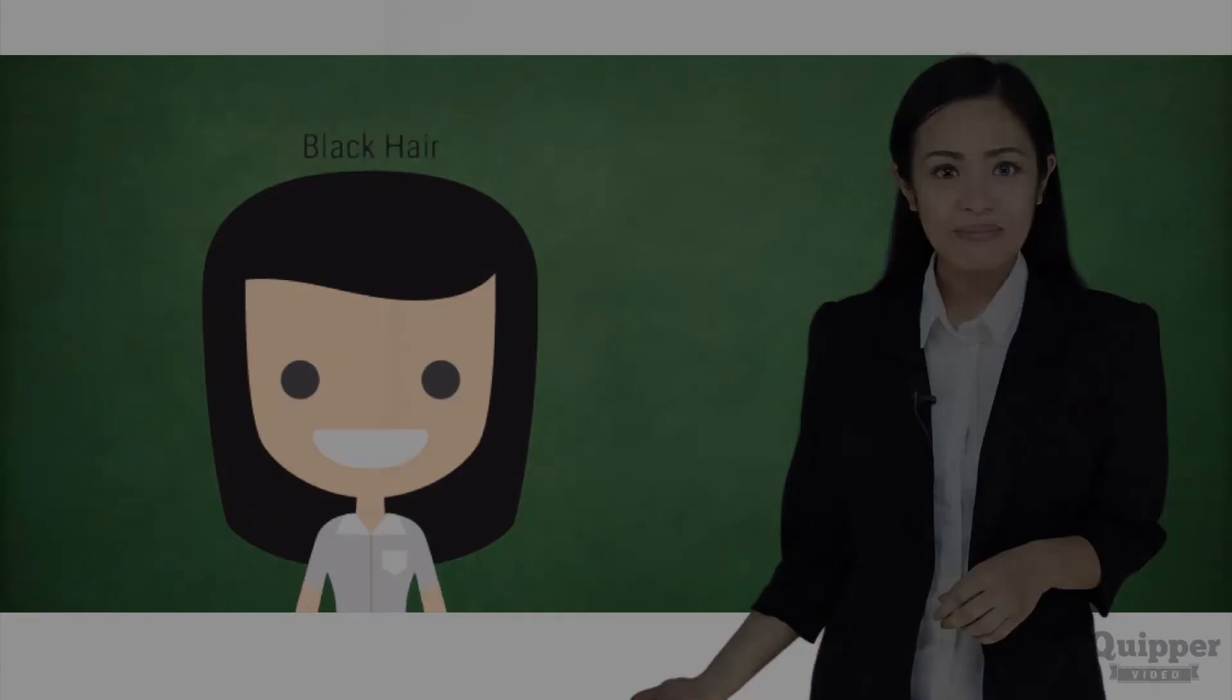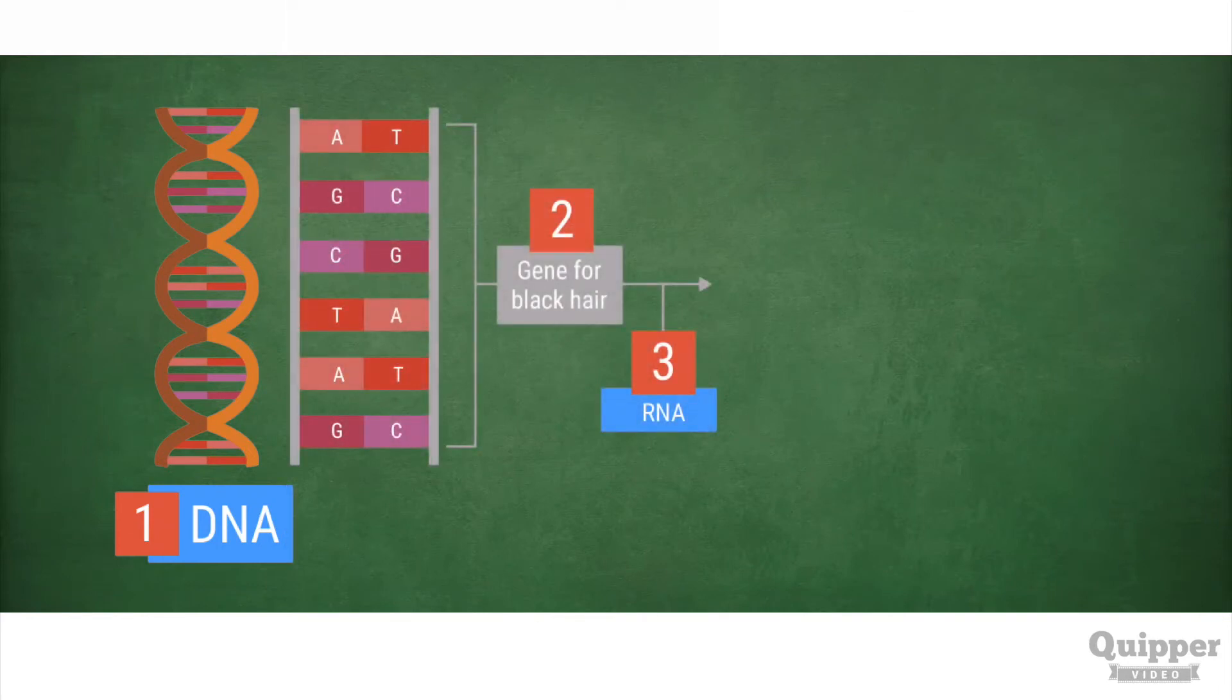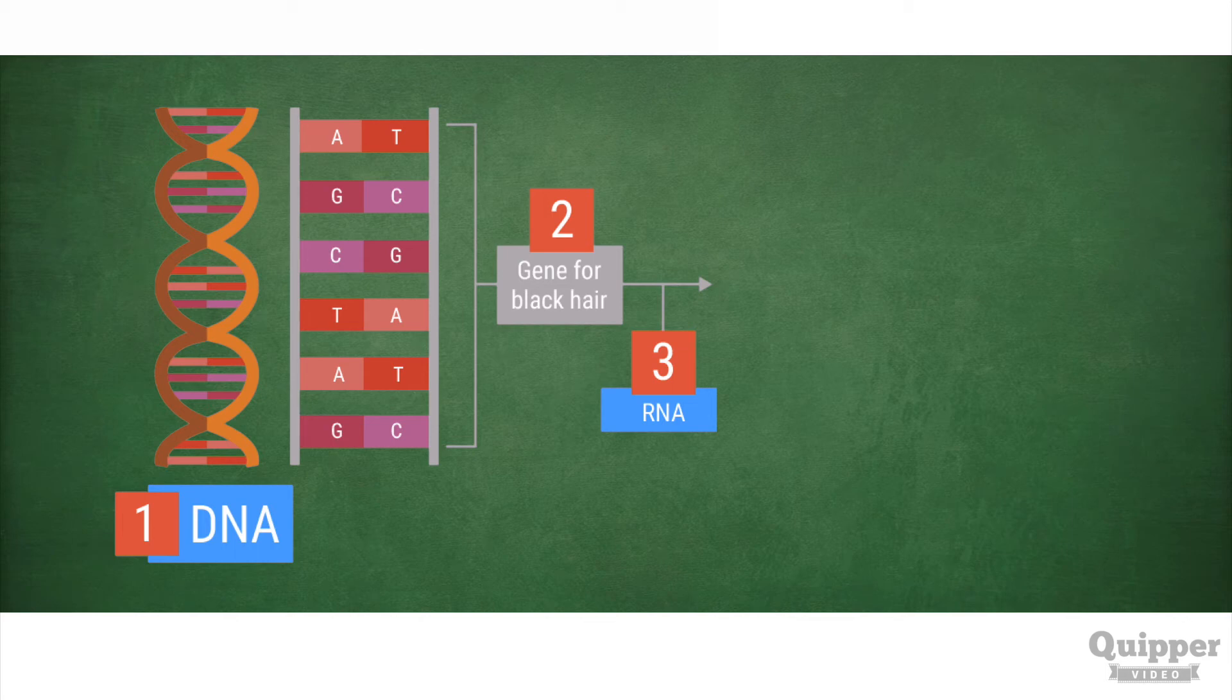Look at the diagram. Let's say that the colored fragment in the DNA is the gene for your black hair. That gene containing specific base pairs will be expressed by the synthesis of proteins with the help of RNA. These are reflected in numbers 2 and 3 in the illustration.